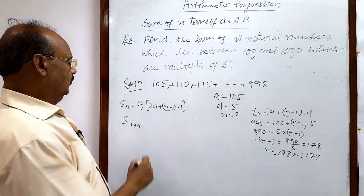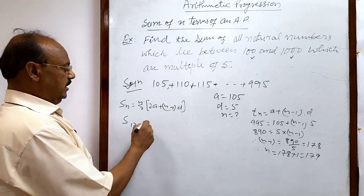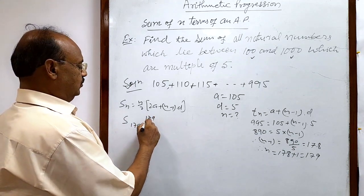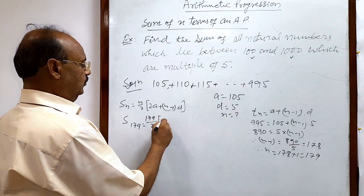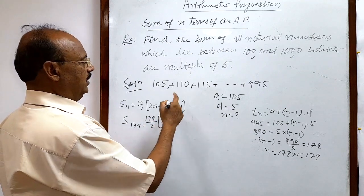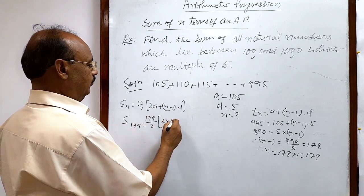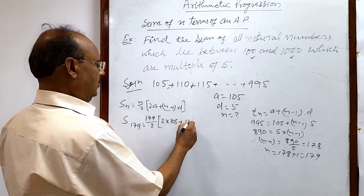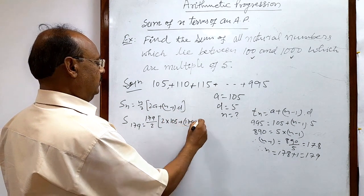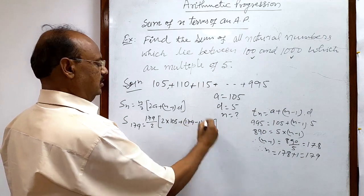So using this formula we can write here S179 is equal to n/2, which is 179/2, times [2a, where a is 105, plus (n minus 1), which is 179 minus 1, times d, which is 5].